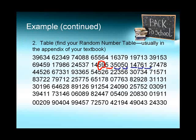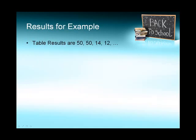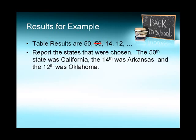If you got to the bottom of the page and didn't have enough states chosen, you would go back up to the top and start with 39, or it might be 03 depending on how your numbers worked out. So now we have at least three states chosen, and our table results were 50, 50, 14, and 12, but we're not going to use the 50 twice. Finally, we're going to report the states that were chosen: the 50th was California, the 14th was Arkansas, and the 12th was Oklahoma.